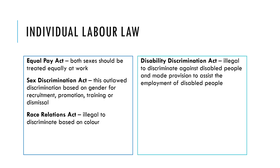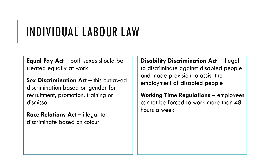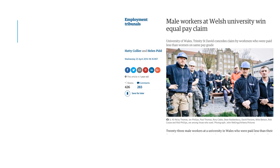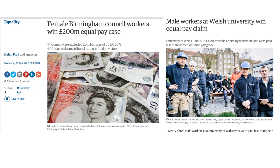The Disability Discrimination Act makes it illegal to discriminate against disabled people. The Working Time Regulations state that you cannot work people more than 48 hours a week. The National Minimum Wage is another example of employment legislation — a minimum hourly wage rate introduced, for example, across the UK. Here are examples of claims against a university and a local council about not paying different genders the same amount of money.